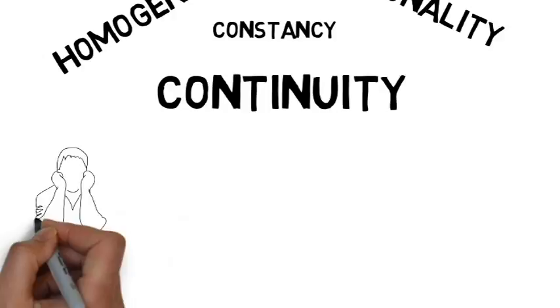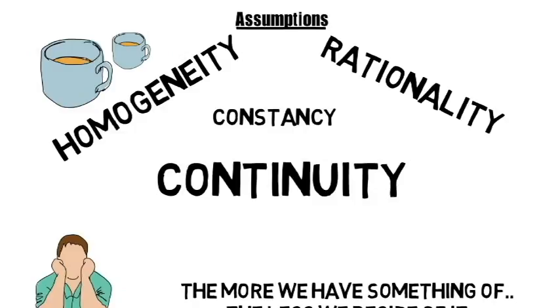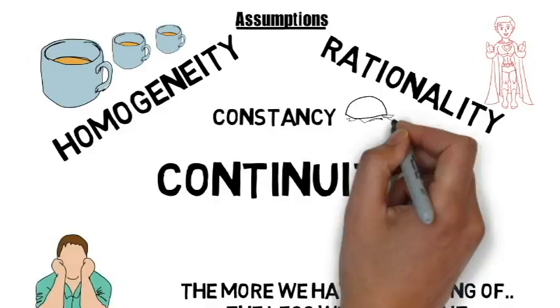The law of DMU is based on certain assumptions as well. Assumptions like homogeneity, rationality, constancy, continuity are really very important for this law to hold. Remember, the law says, the more we have something of, the less we desire of it. Suppose you are having three cups of tea. If the amount of tea in the successive cups keeps on reducing, then maybe your utility might not fall. Hence, for the law to hold, it is very important that you drink homogenous or identical cups of tea. The assumption of rationality states that you act like a normal person and not superhuman. That is, when you are thirsty, you drink a glass of water and not a bucket of water to quench your thirst.